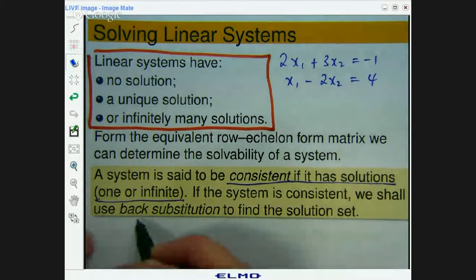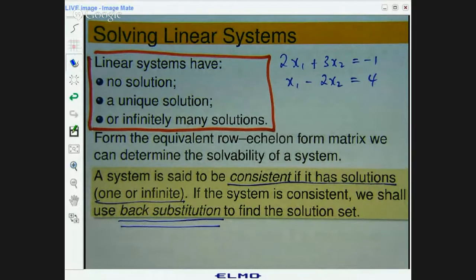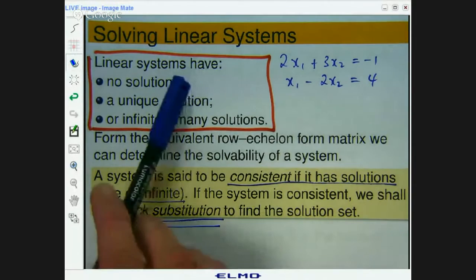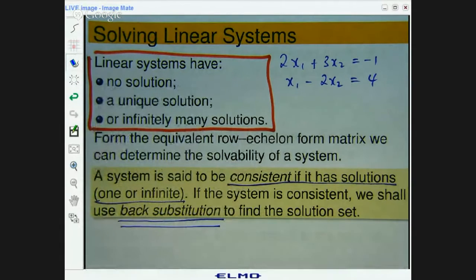Now, if the solution is consistent, then we can use an idea called back substitution to find the solution set. Now, if a linear system has no solutions, then we call it inconsistent.